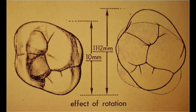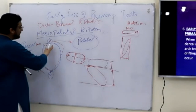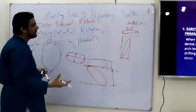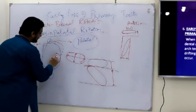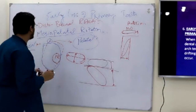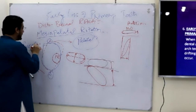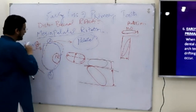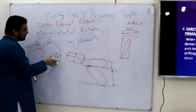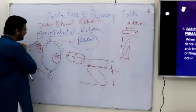When the first molar is normally positioned, it occupies around 10 to 11 mm in the mesiodistal dimension. But if this tooth is rotated — we have rotation on the palatal root, the mesiopalatal rotation — because of this rotation, it may occupy up to 13 mm of space.